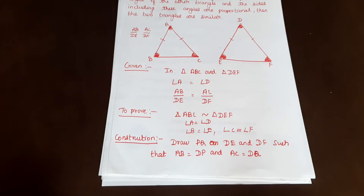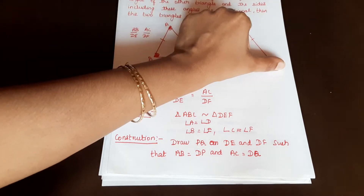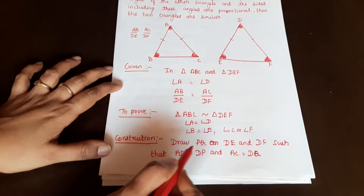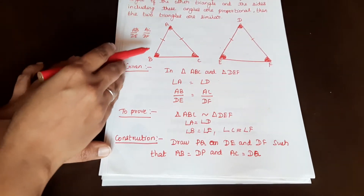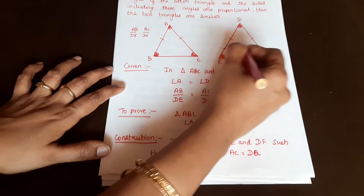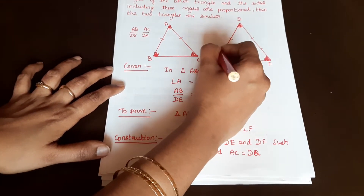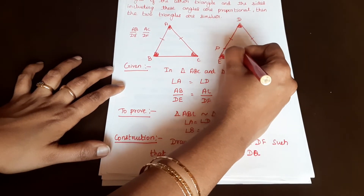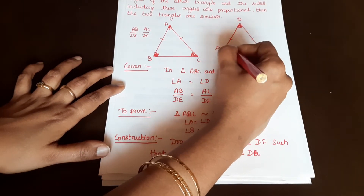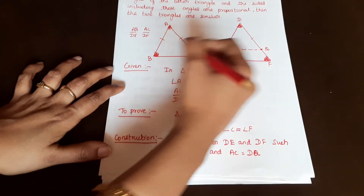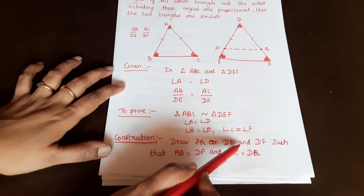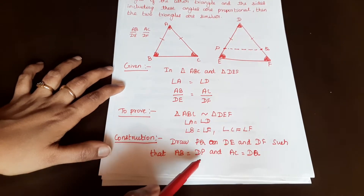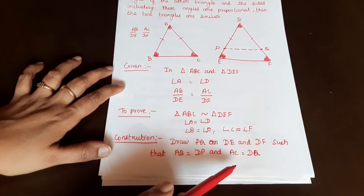First, construction: draw PQ on DE and DF such that AB is equal to DP and AC is equal to DQ, placing points P and Q accordingly and joining PQ.